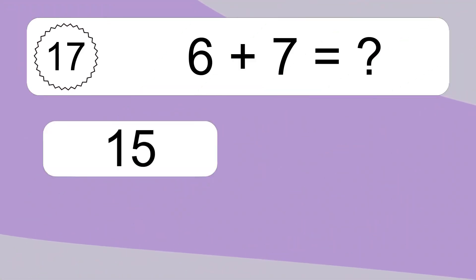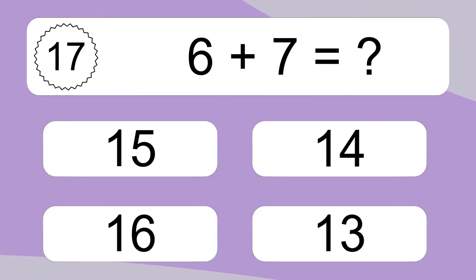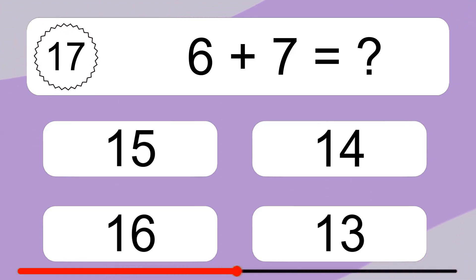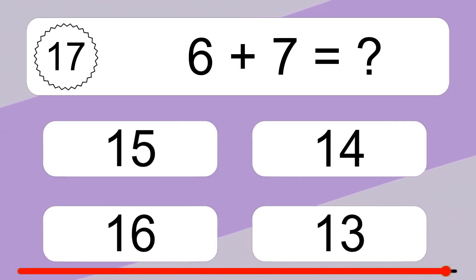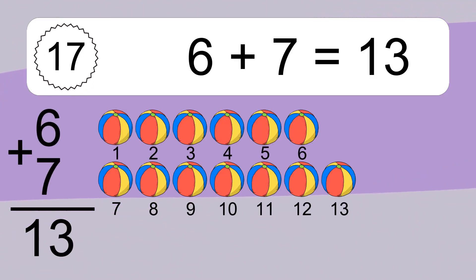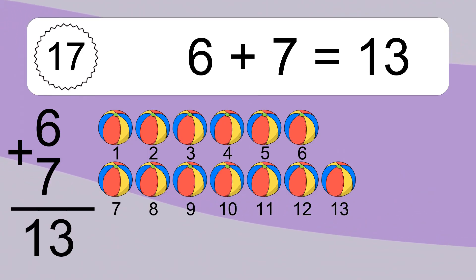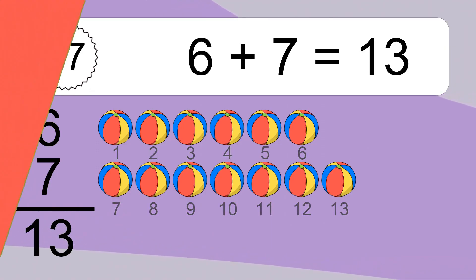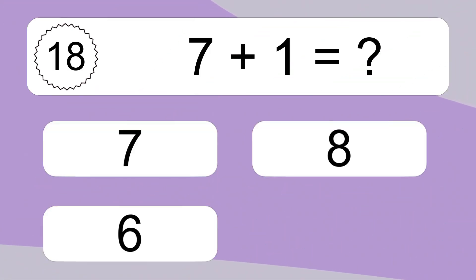6 plus 7 equals what? 6 plus 7 equals 13. Let's count it. 1, 2, 3, 4, 5, 6, 7, 8, 9, 10, 11, 12, 13.